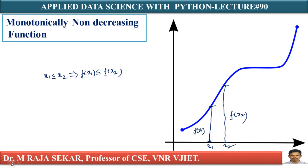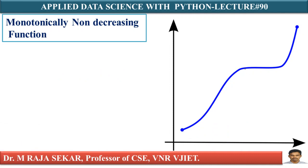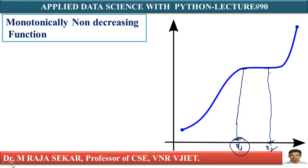Even if you take two more points: this is x1, this is x2 — f(x1) is this height, f(x2) is this height. x1 ≤ x2, and f(x1) ≤ f(x2). Therefore this function is a monotonically non-decreasing function. That is what we were saying in the previous slide. Your Spearman's Rank Correlation Coefficient is useful to capture this type of relationship — monotonically non-decreasing relationships. It can capture these types of relationships.